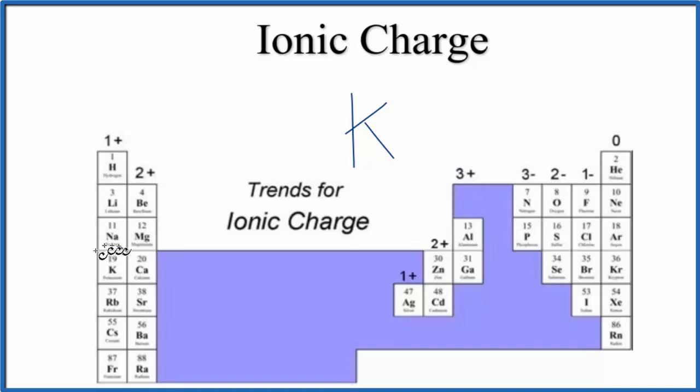For potassium, right here, it's in group one, so it has an ionic charge of one plus. We usually just write a plus. So the ionic charge for potassium, one plus.